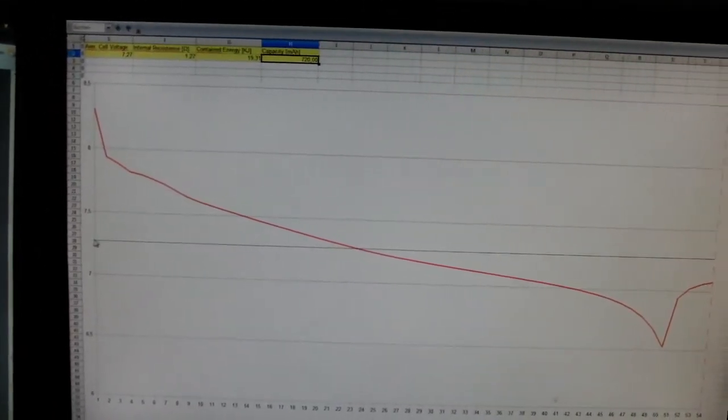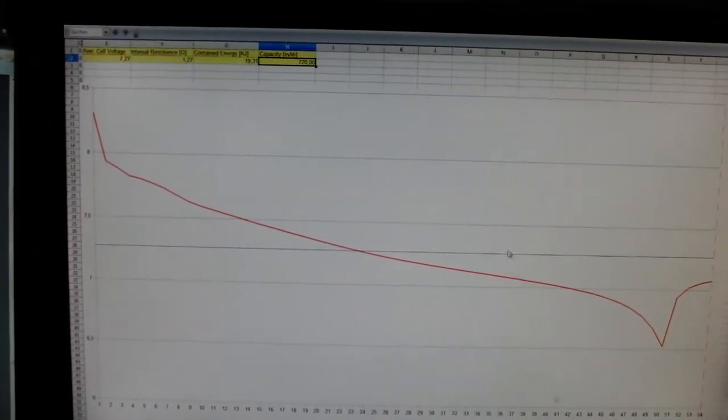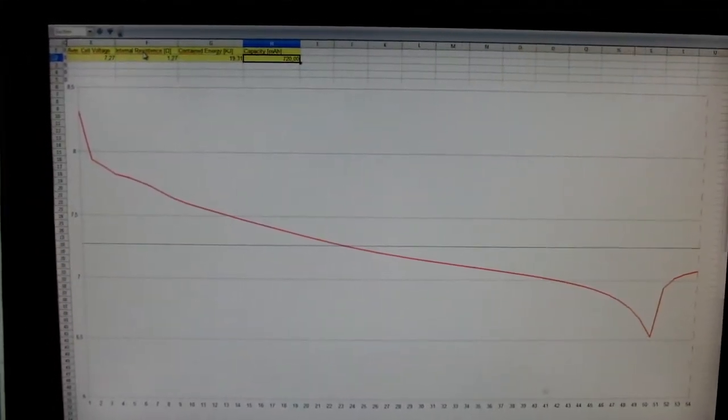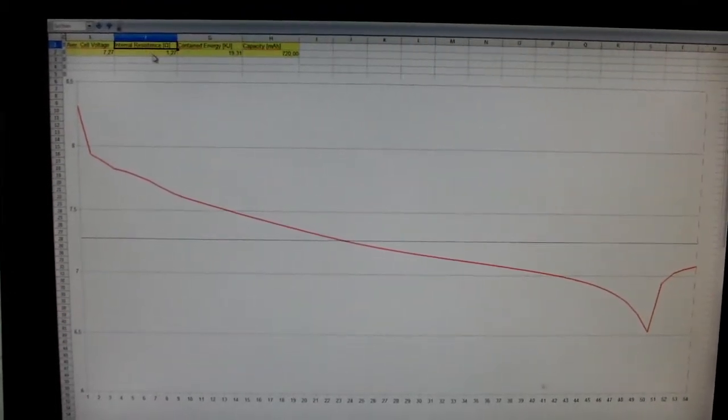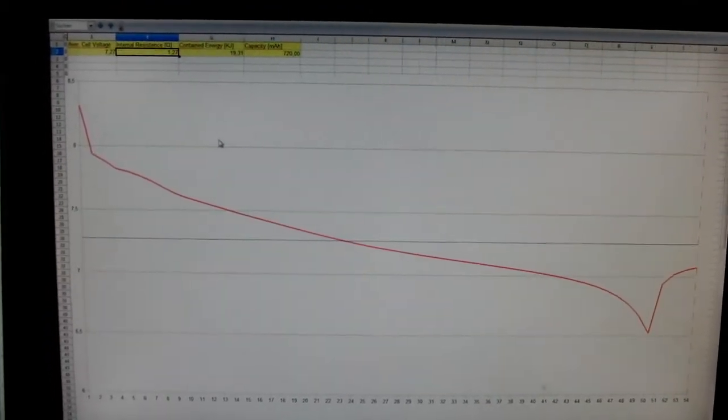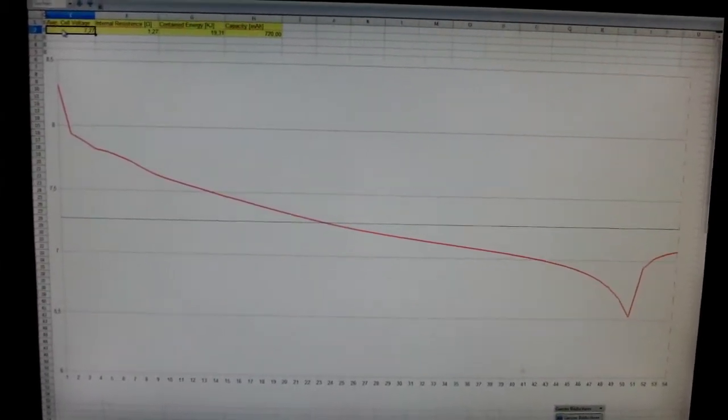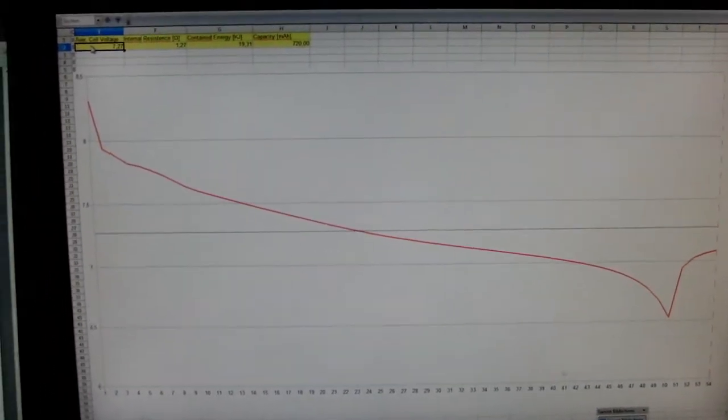I used this blue value, that's the average cell voltage while discharging, to calculate the internal resistance of the battery which is about 1.27 ohms. The average cell voltage is 7.3V by the way.